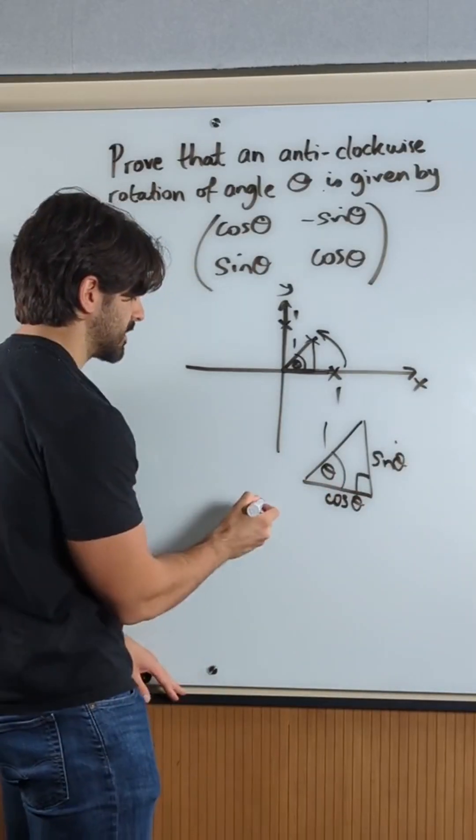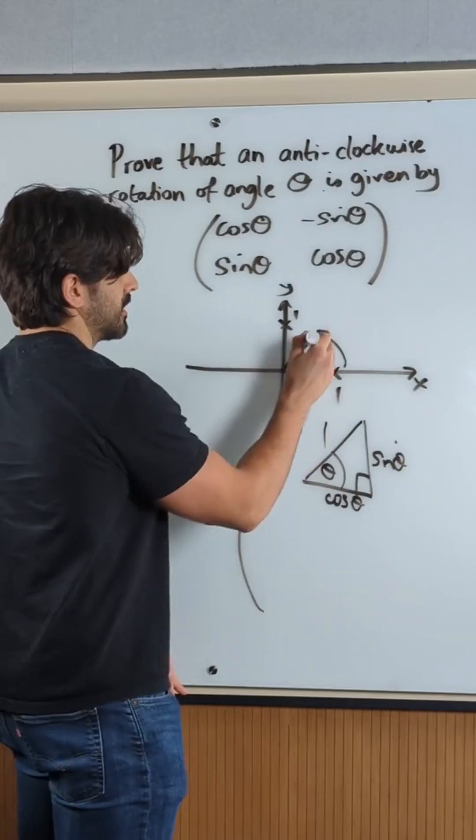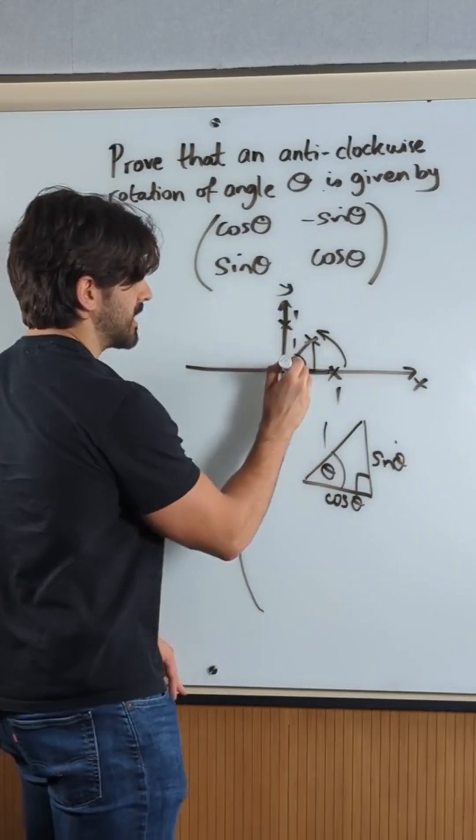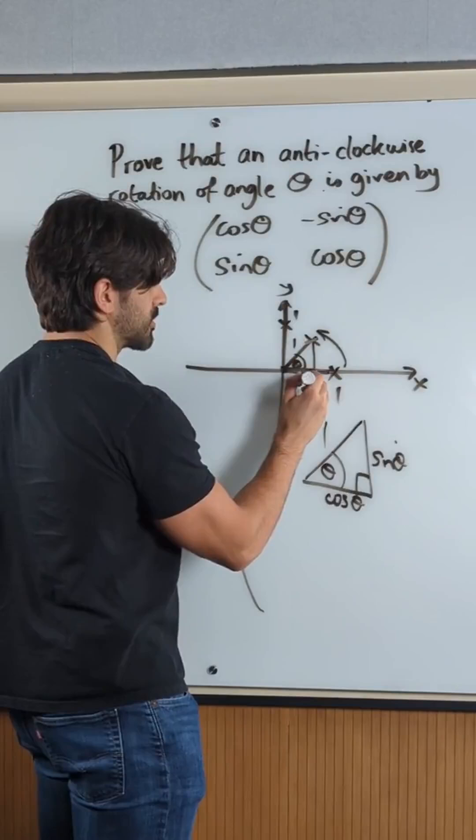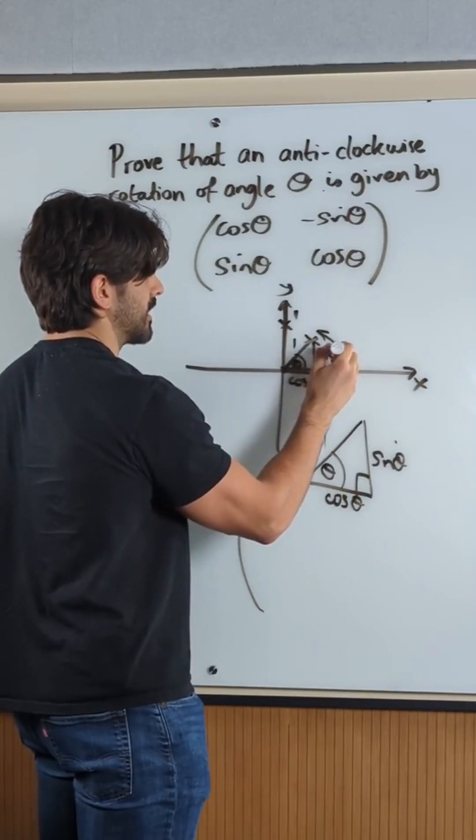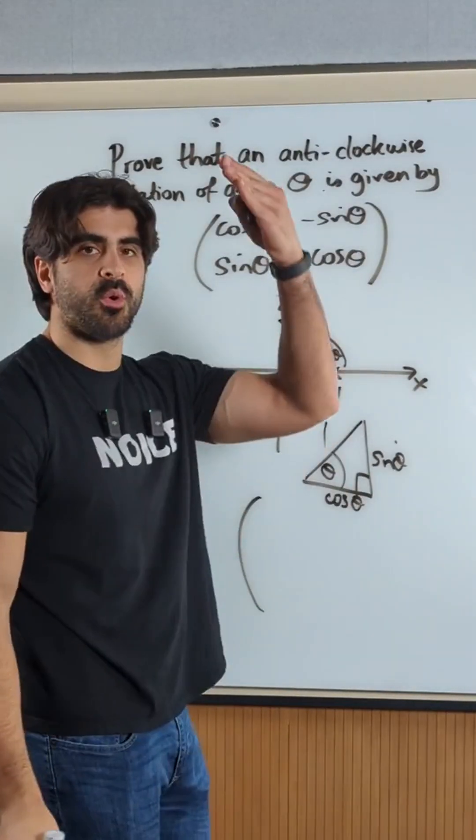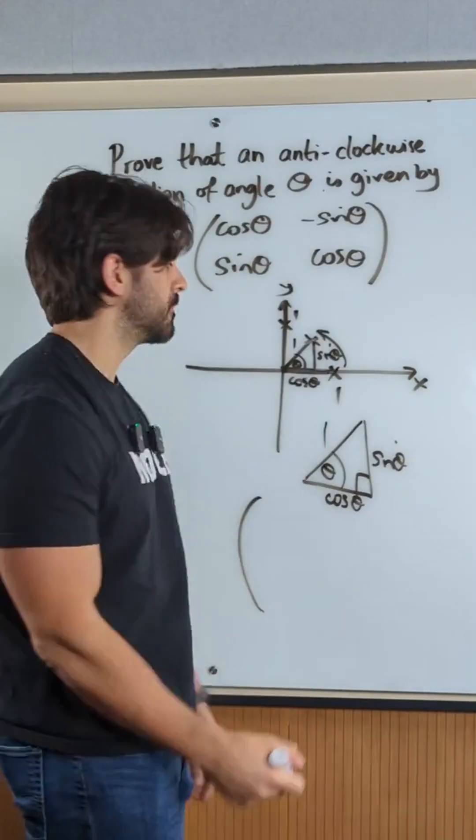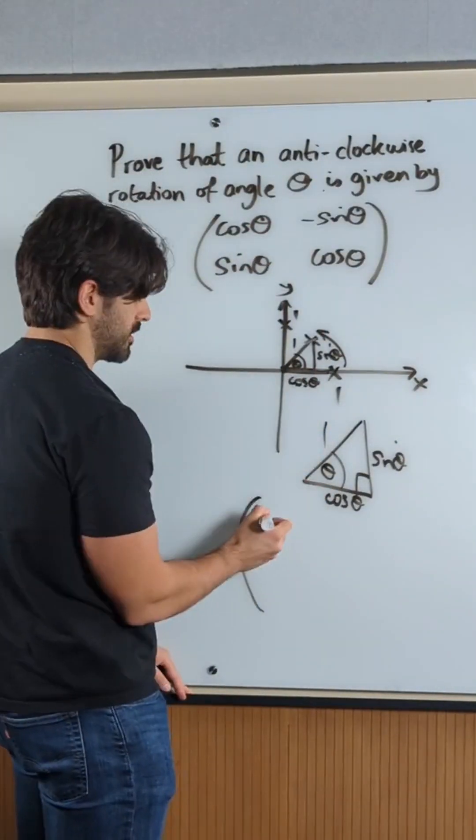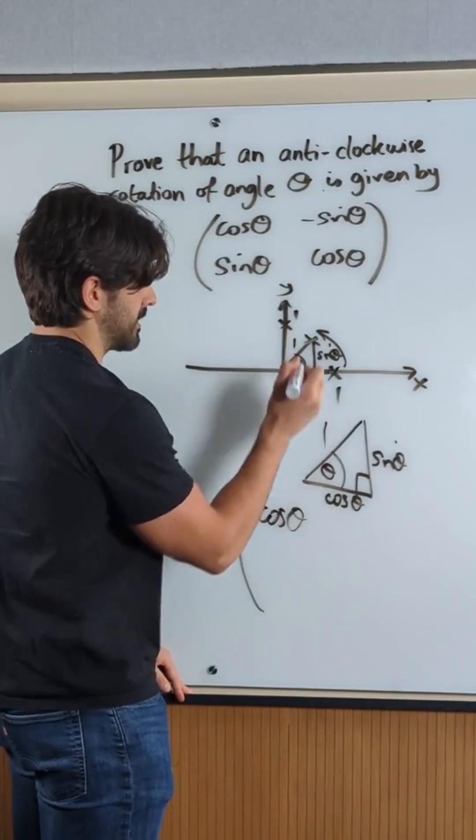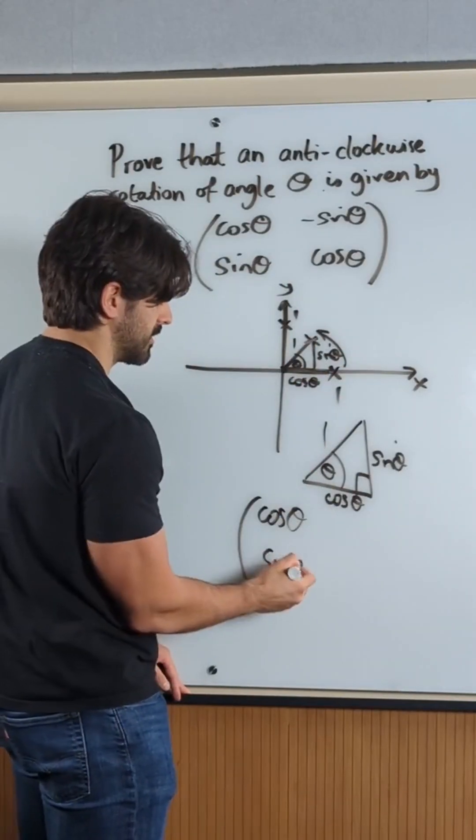So in terms of our new matrix, the x value is cosine theta and the y value is sine theta. Now we always write the coordinates downwards, x, y. So the x coordinate is cosine theta and the y coordinate is sine theta.